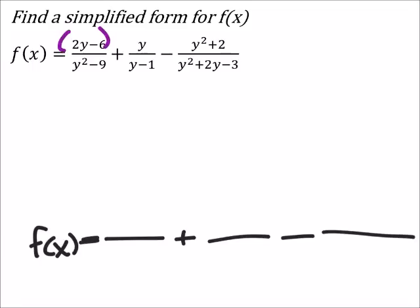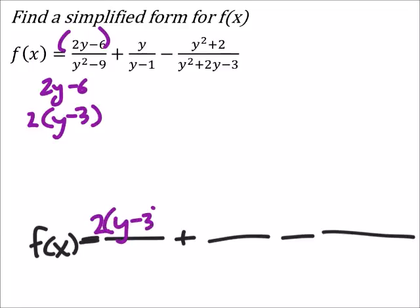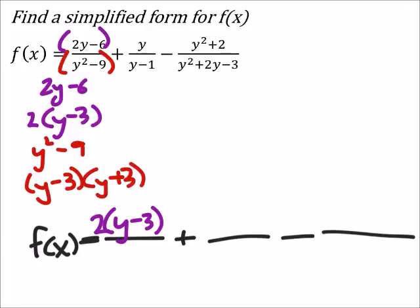So I'm going to start by factoring first from this 2y minus 6 which if I factor out a 2, then I get a y minus 3. So that will go here in the function. And then I've also got right here my y squared minus 9, which is the difference of squares, so I would have y minus 3 and y plus 3, which will go below my purple there.